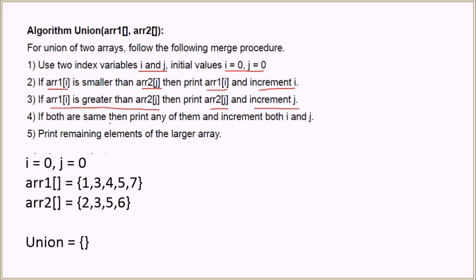If both elements are the same, we print only one of them and increment both i and j. This is done because in the union we want to count common elements only once. Once this is done, at least one of the arrays will be exhausted. We then insert the remaining elements of the larger array into the union array.